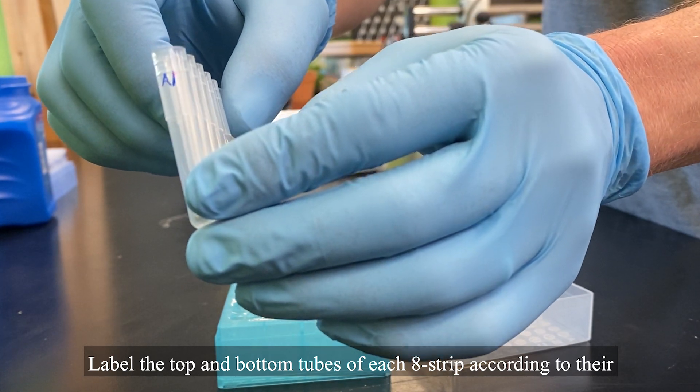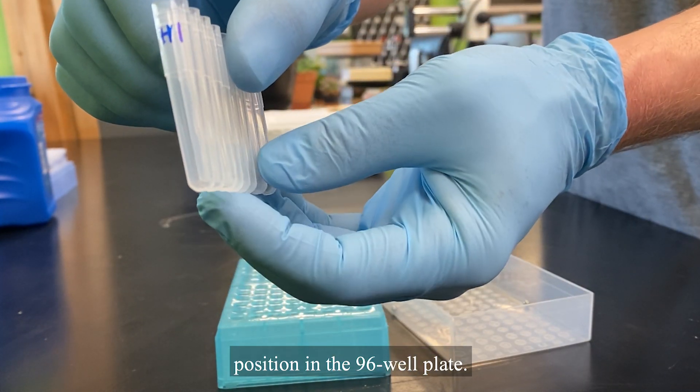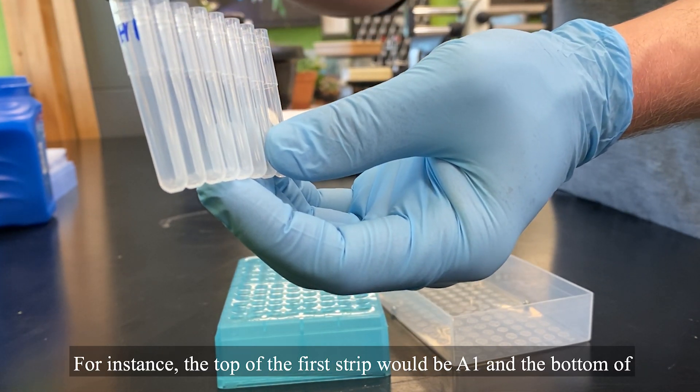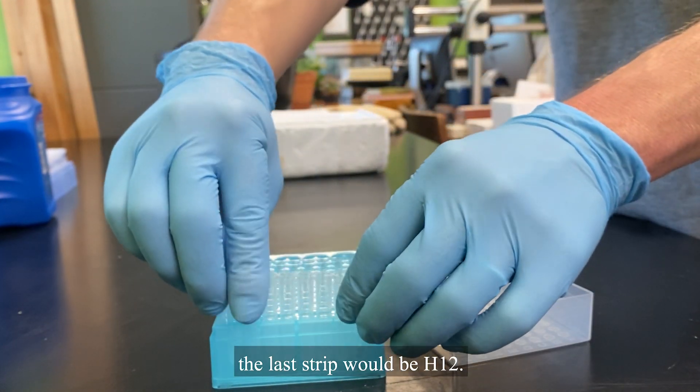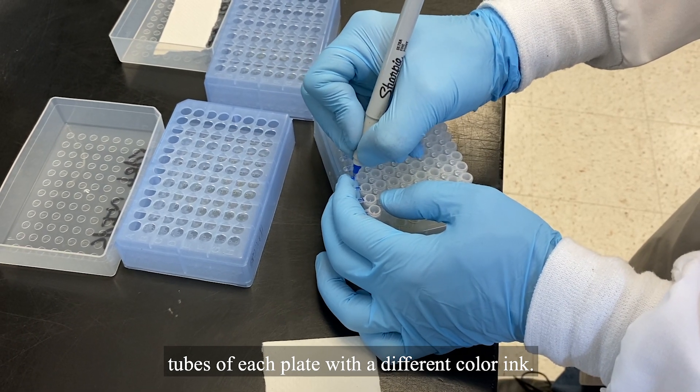Label the top and bottom tubes of each eight strip according to their position in the 96-well plate. For instance, the top of the first strip would be A1, and the bottom of the last strip would be H12. Note that if you're doing two plates, it's helpful to number the tubes of each plate with a different color ink.